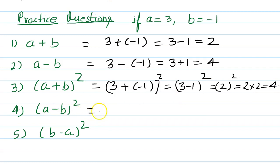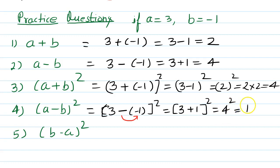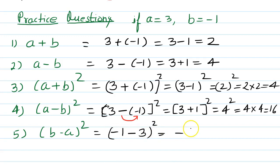For (a minus b) whole square: a is 3, minus sign, b is minus 1 in brackets. Minus and minus becomes plus, so (3 plus 1) squared — that is 4 squared, and 4 times 4 is 16. For (b minus a) whole square: b is minus 1, minus a is 3, so (minus 1 minus 3) squared — that is (minus 4) squared, and minus 4 times minus 4 is positive 16.